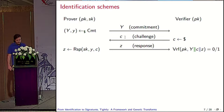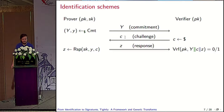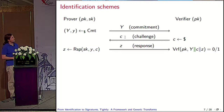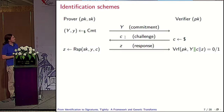Identification schemes — what's that? This is the standard syntax of identification schemes, seen at least twice yesterday in two talks. We look at this three-move identification scheme. There's a prover on the left and a verifier on the right. The three messages are called commitment, challenge, and response, denoted by uppercase Y, C, and Z. The commitment is sampled using a commitment generation algorithm CMT, which outputs the commitment made public and a local state — the secret state of the prover, little y. This y goes into the response algorithm that outputs the response given the challenge contributed by the verifier. The combination of Y, C, and Z is called the transcript, which is verified by the verifier in the end.